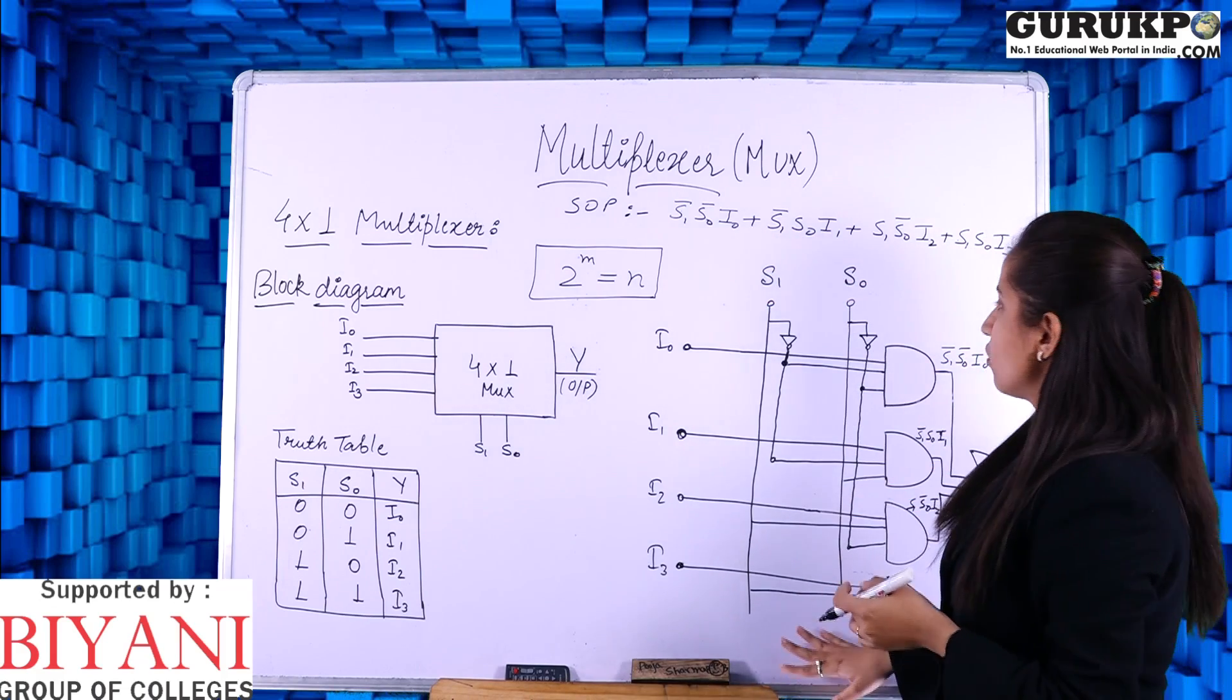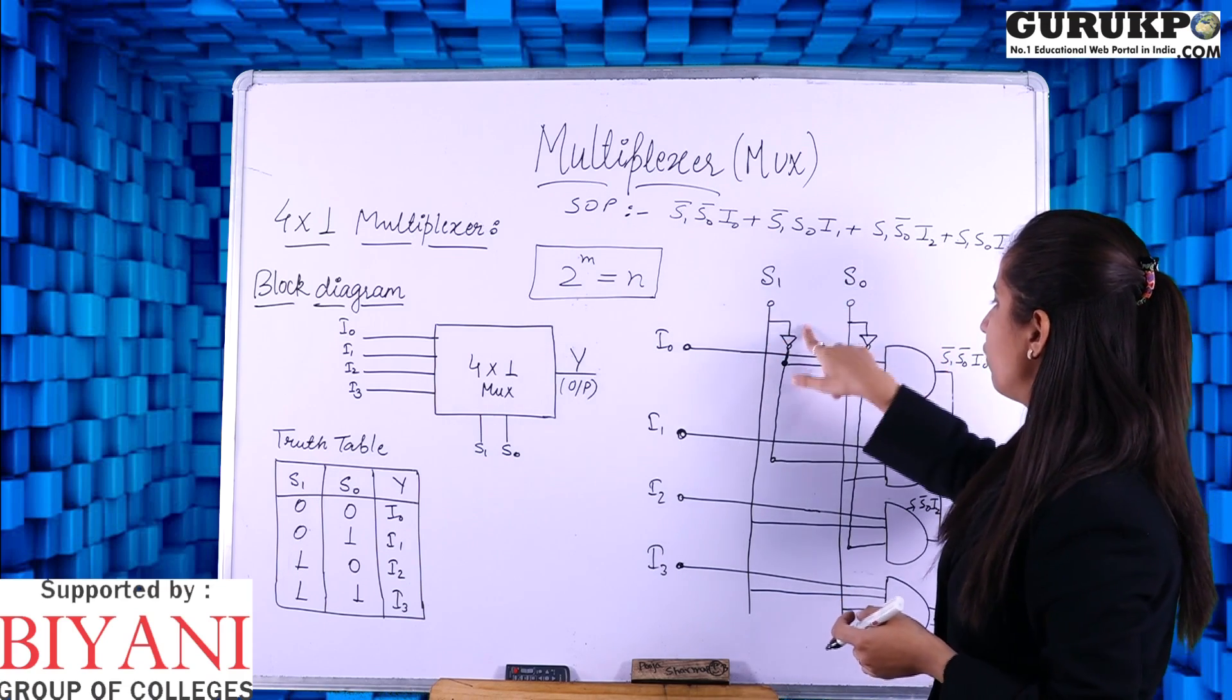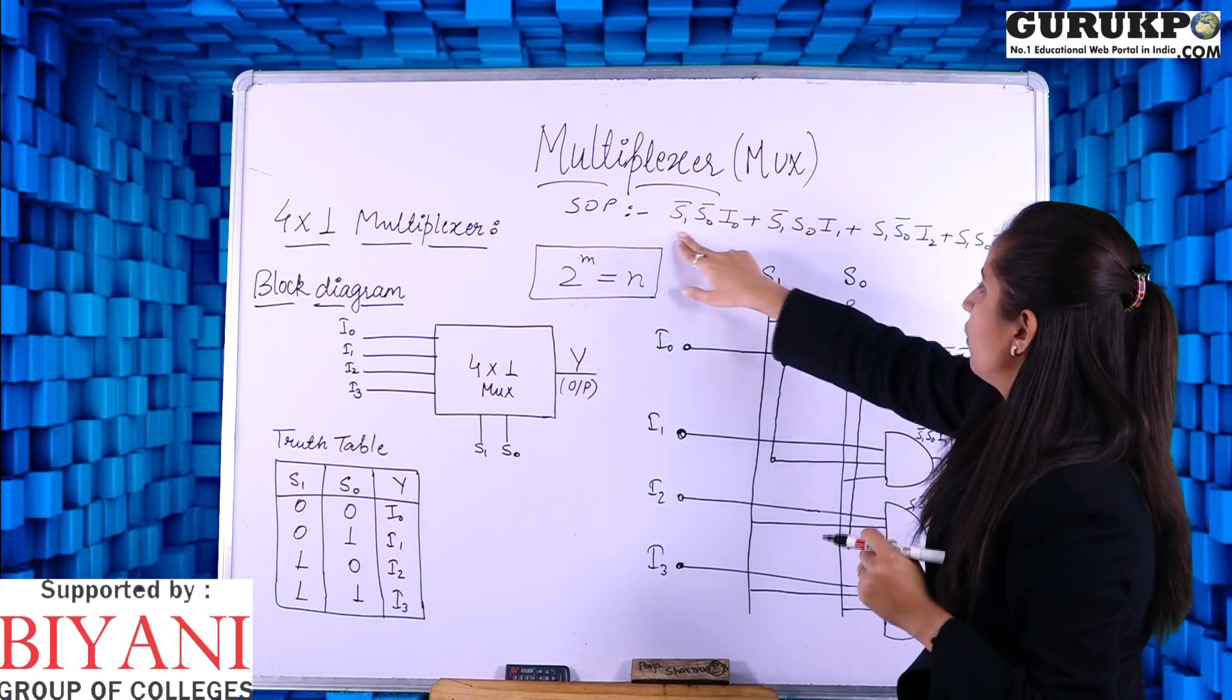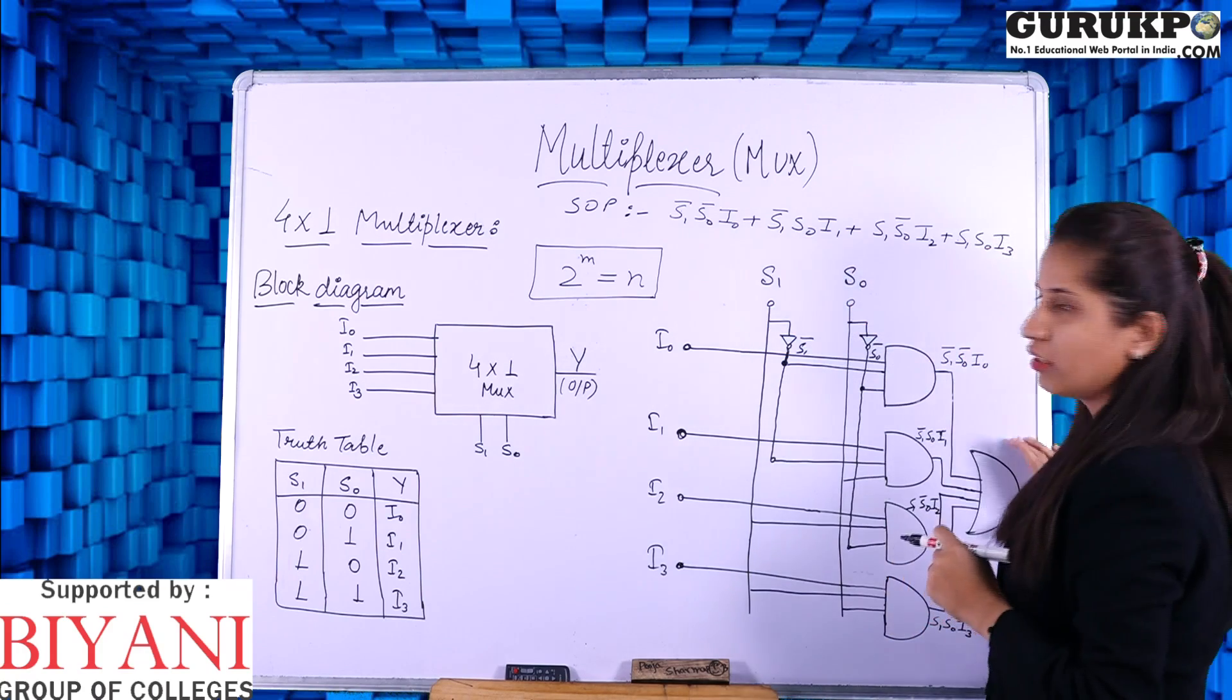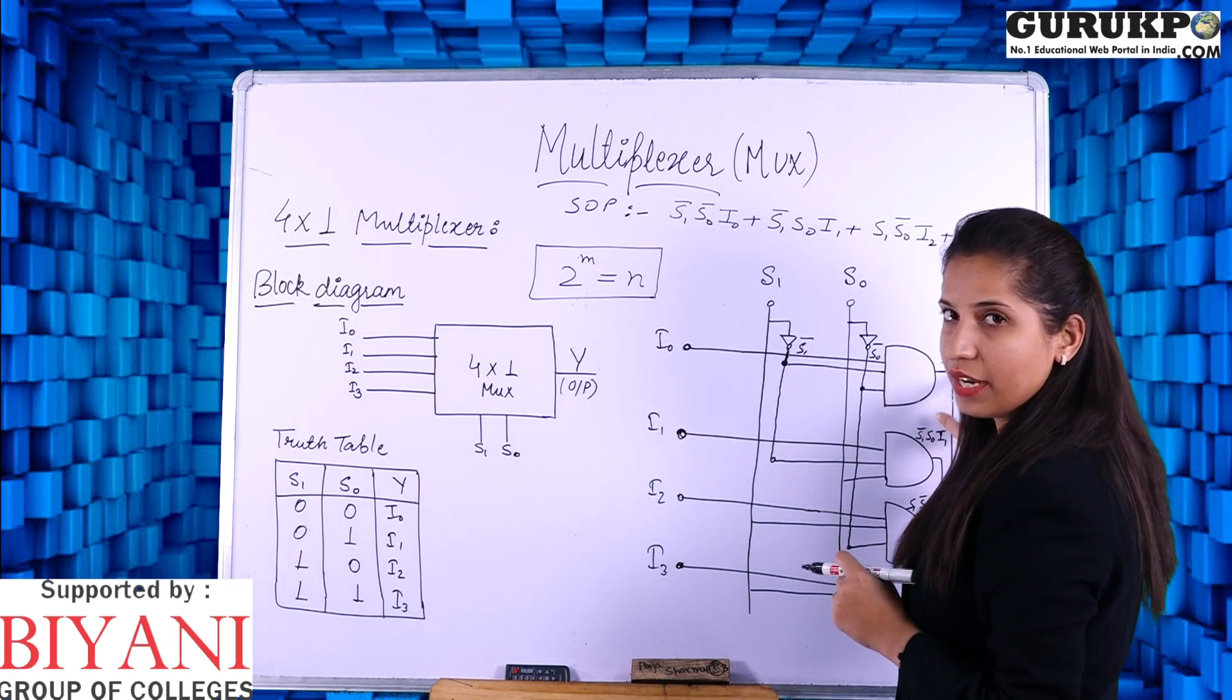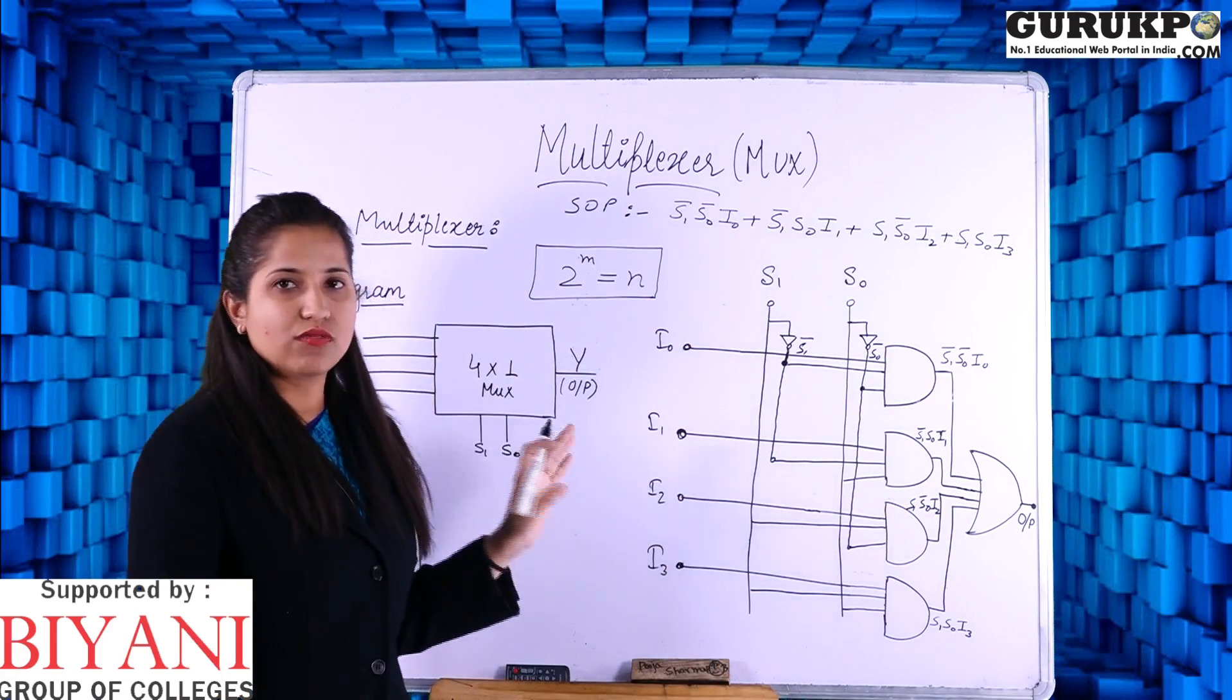Next step is to draw the logic diagram. You can see the SOP form, we are using S1 S0 their bar and simple also. You need S1 and S0 and 1 NOT gate for S1 and 1 NOT gate for S0. They will convert to S1 bar and S0 bar. Again we need the product of these, for the product we need AND gates and then sum of all these. For the sum you take an OR gate. I0, S1 bar and S0 will give S1 bar S0 and I0. All the 4 terms you can get from this and from the OR gate you get the summation of all these 4s. This total is the 4x1 multiplexer.